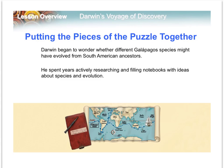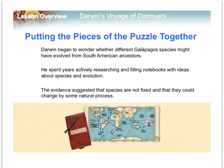Darwin spent several years researching and putting together his ideas to explain everything he saw. The evidence suggested that species are not fixed and that they could change by some natural process. That natural process is what he finally came up with, which we know as natural selection.